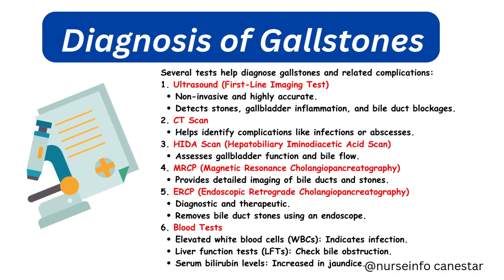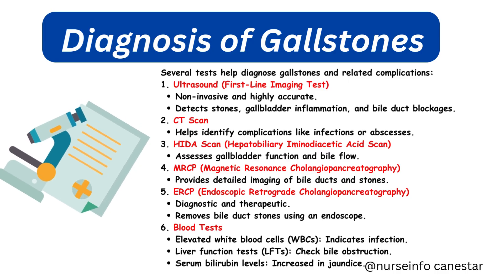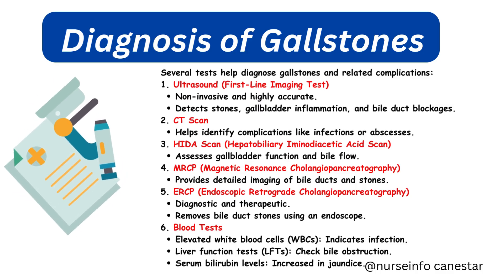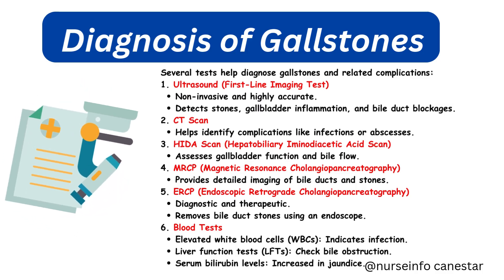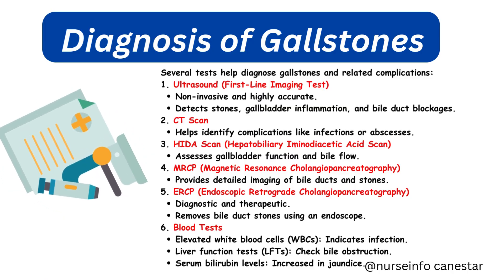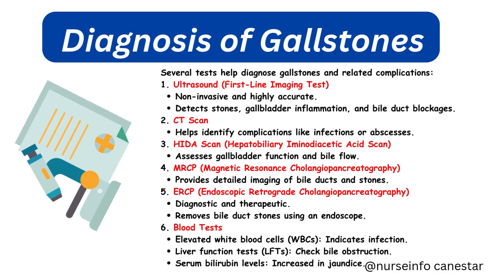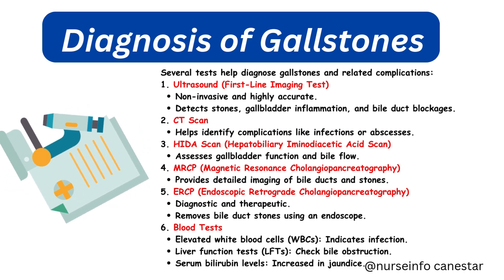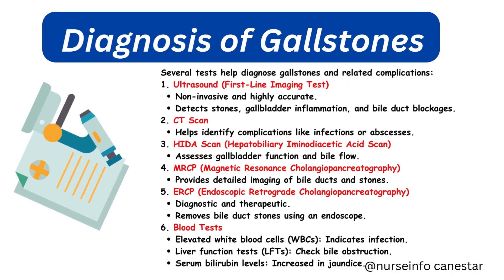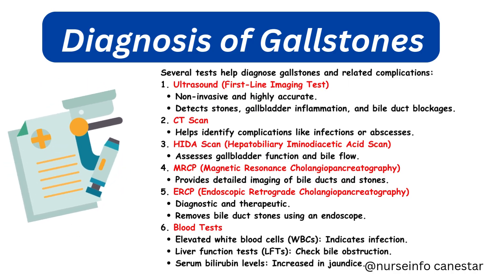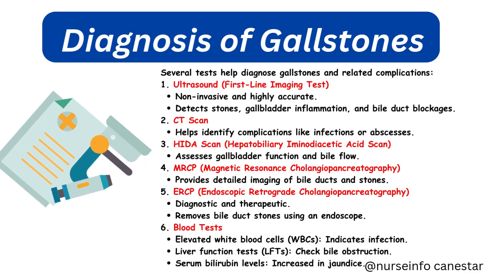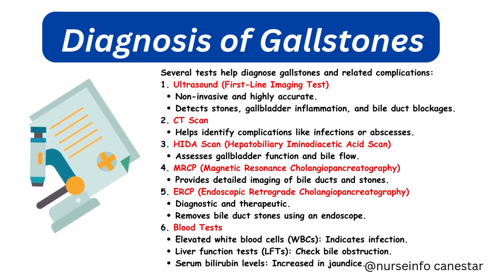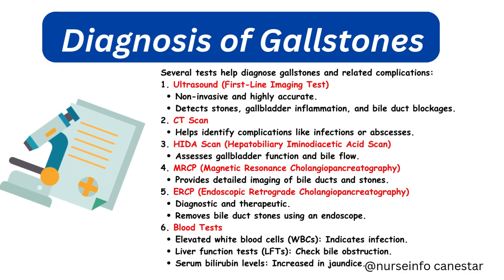Fourth, MRCP — magnetic resonance cholangiopancreatography — provides detailed imaging of bile ducts and stones. Fifth, ERCP — endoscopic retrograde cholangiopancreatography — is both diagnostic and therapeutic, removing bile duct stones using an endoscope. Sixth, blood tests: elevated white blood cells indicate infection; liver function tests check for bile obstruction; and serum bilirubin levels are increased in jaundice.